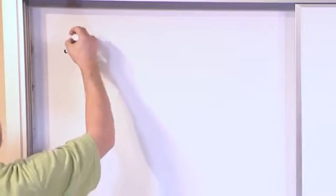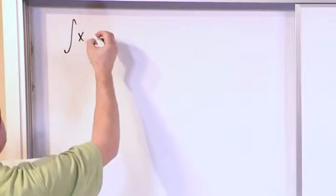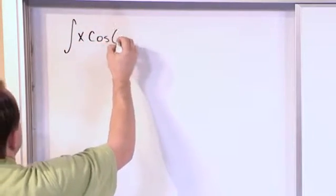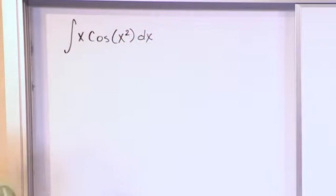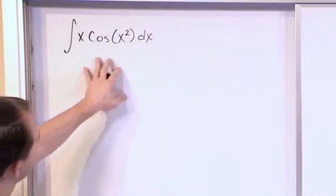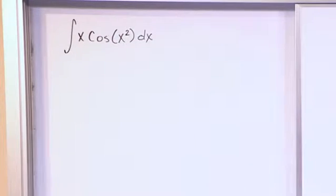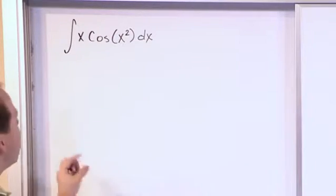We'll do a few problems here of increasing complexity. What if we had the integral of x times cosine of x squared dx? Now just by staring at this you can see that it doesn't fit any form of what we've done so far.